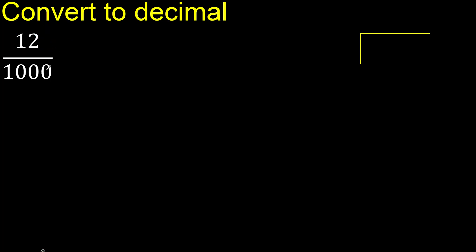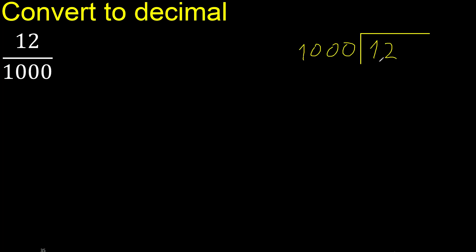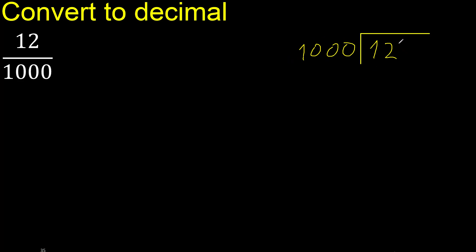12 divided by 1000. 12 is less than 1000, therefore complete with 0. 0 point — 120 is less, therefore 0. The point is here.